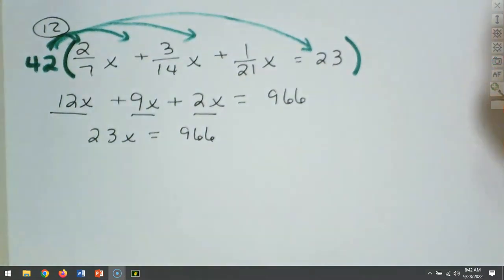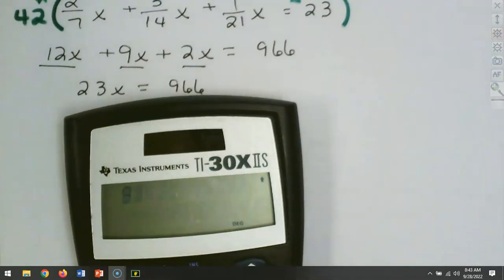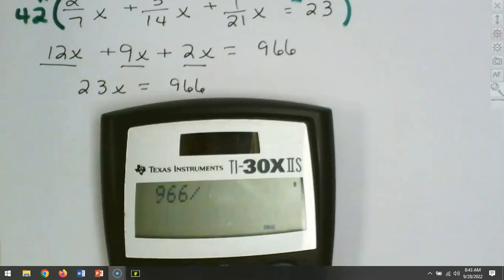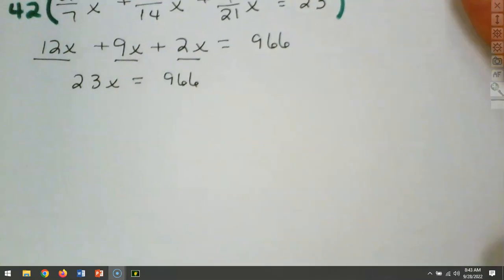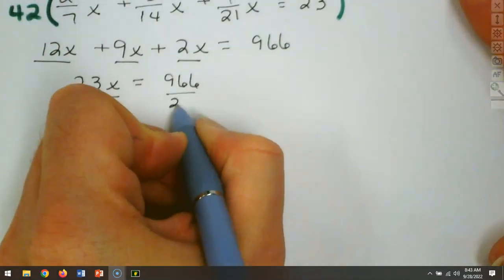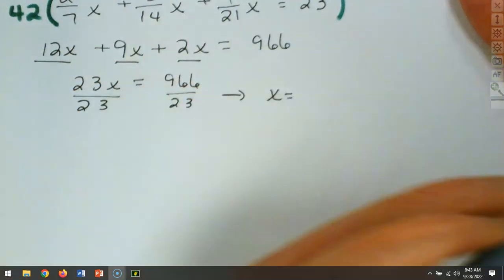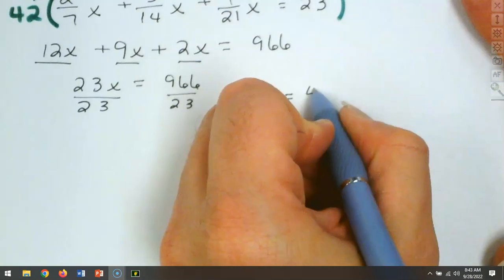Our very last step is to divide. We combine all x's on the left: 12 plus 9 makes 21, plus 2 more makes 23x, which equals 966. Take 966 divided by 23, and that comes out to be 42. So x equals 42 — and we know we did it correctly because it's a whole number.